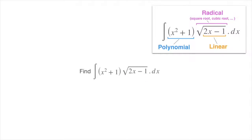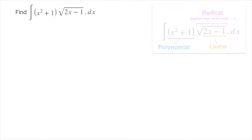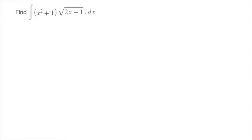Now as soon as we have an integral that matches those criteria, we can use the method of substitution. For that we define a new variable. The first option is to let the new variable, which we typically call u, equal to 2x minus 1. Notice that this 2x minus 1 is the linear inside the radical function.